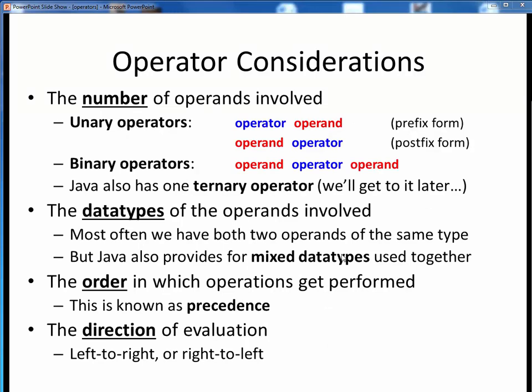When we're working with operators, there are several aspects that we want to take into account. The first consideration is the number of operands involved with any operator. The vast majority of operators in Java are binary operators, as we see here.